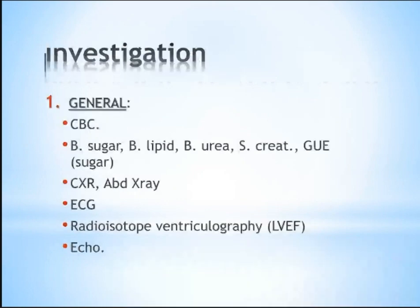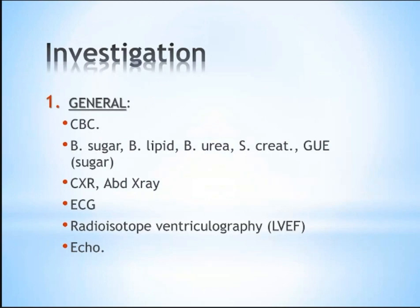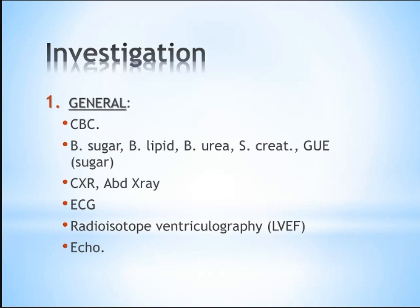We have two types of investigation: general and specific. A general investigation for arterial disease includes a complete blood count — important to see if the patient is anemic. Blood sugar is very important to identify diabetic patients, as diabetics have greater liability for peripheral vascular disease, central artery disease, and coronary insult. Hyperlipidemia, whether familial or acquired, increases the risk of atherosclerosis in peripheral and central arteries like the coronary artery.